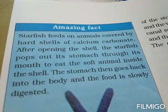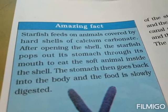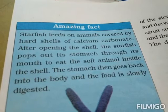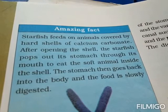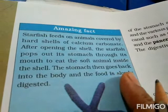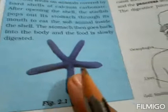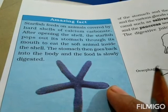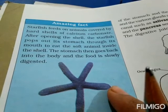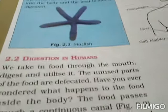Amazing fact: Starfish feeds on animals covered by hard shells of calcium carbonate. After opening the shell, the starfish pops out its stomach through its mouth to eat the soft animal inside the shell. The stomach then goes back into the body and the food is slowly digested. So partial digestion takes place outside its body.